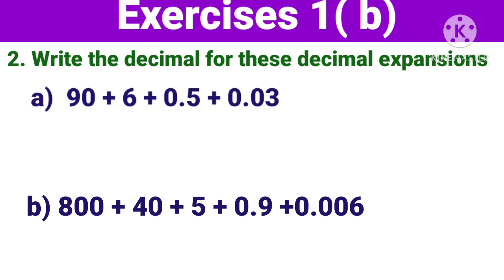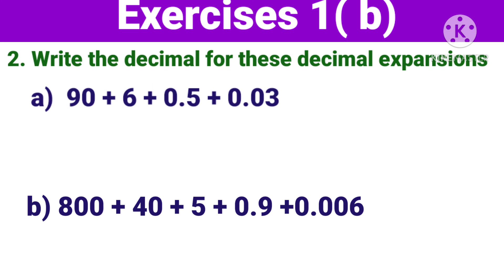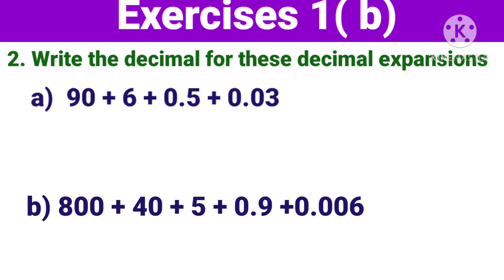Now next section: Write the decimal for these decimal expansions. Yahaan par: ninety plus six plus zero point five plus zero point zero three. Toh ye expand karawa hai jisko hum decimal form mein likhna hoga. Dekhiye — ninety plus six: ye to whole part mein aayega. Zero point five, zero point zero three: ye aayega fractional part mein. Toh yisko hum likhenge: ninety six point five three. Dekhiye, aapko ye bhi check karna hoga ki five tenth place pe hai yahaan par. Aur three jo hai, woh hundredth place pe hai. Toh ye sequence mein hai. Isliye hum likhenge: 96.53.